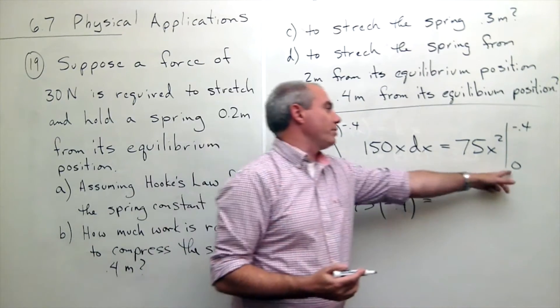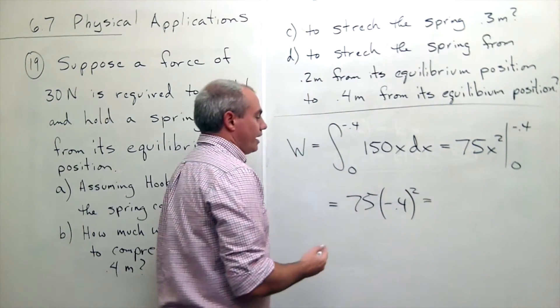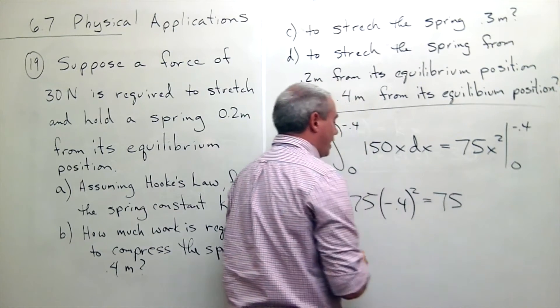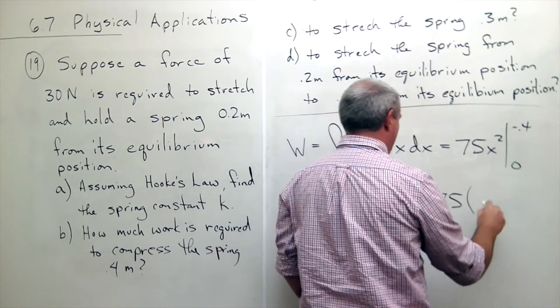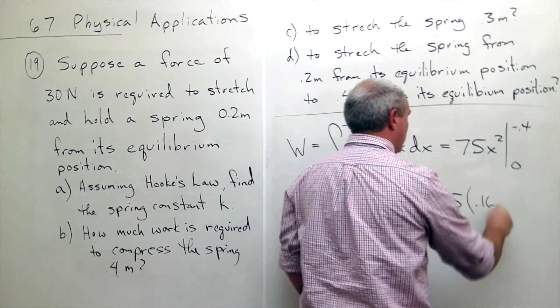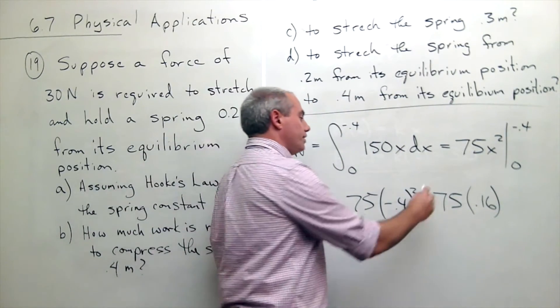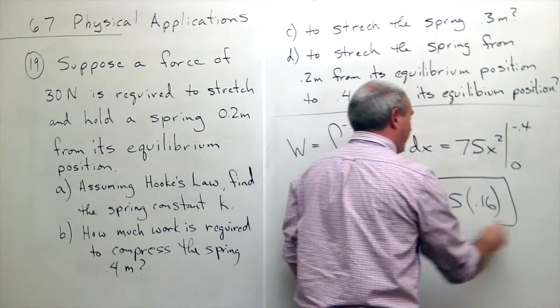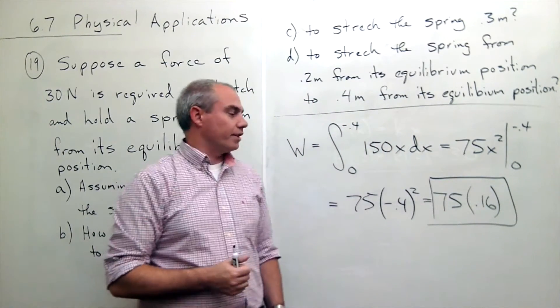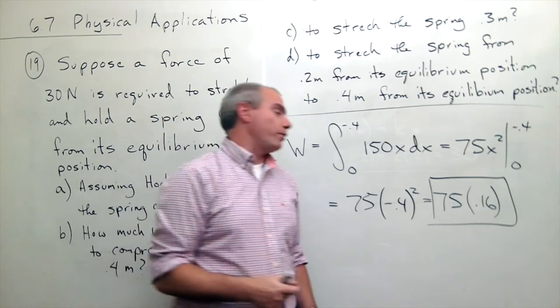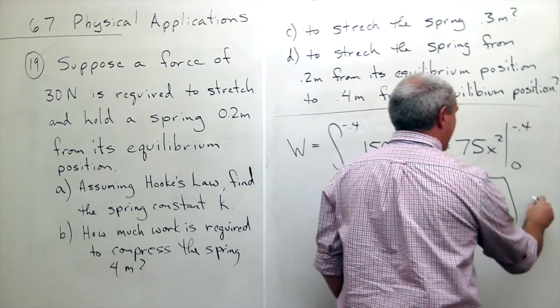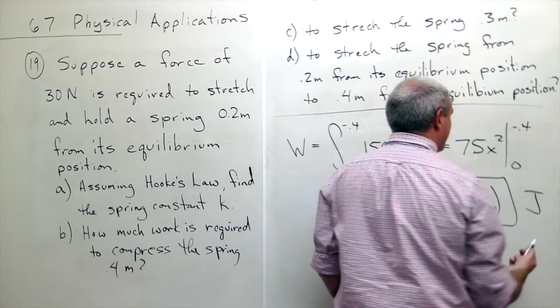Of course if I plug in 0 I get 0, and then we get 75 times 0.16. I'll leave the final punching that into a calculator to you. We get 75 times 0.16. And of course this is an answer in joules.